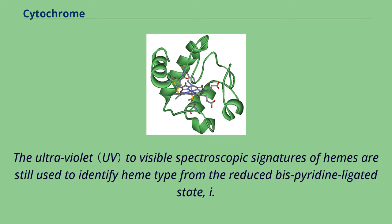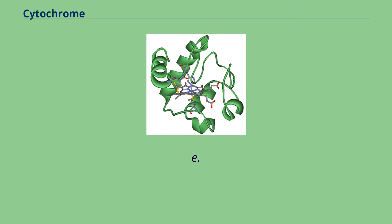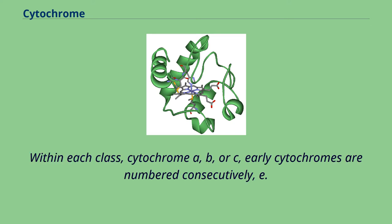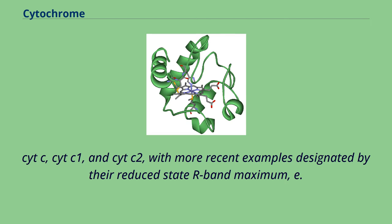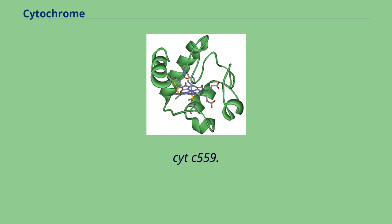The ultraviolet to visible spectroscopic signatures of hemes are still used to identify heme type from the reduced bis-pyridine ligated state, i.e., the pyridine hemochrome method. Within each class — cytochrome A, B, or C — early cytochromes are numbered consecutively, e.g., cyt-C, cyt-C1, and cyt-C2, with more recent examples designated by their reduced state alpha band maximum, e.g., cyt-C559.